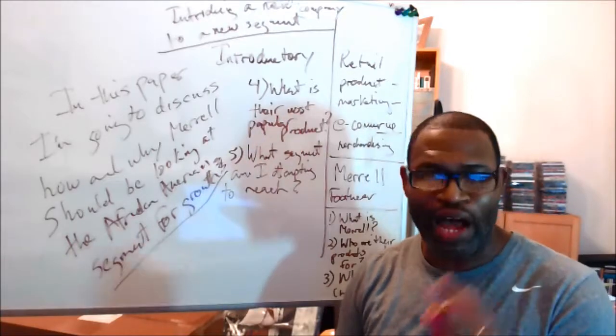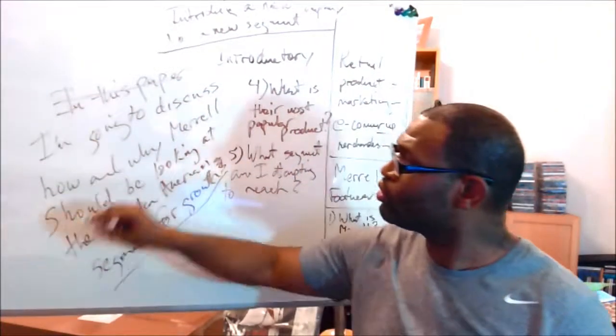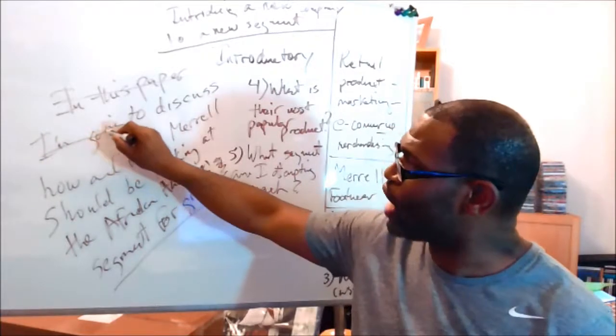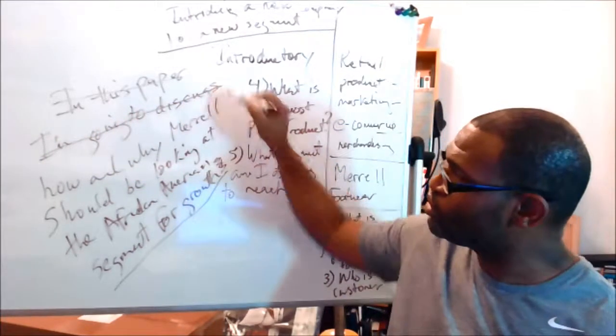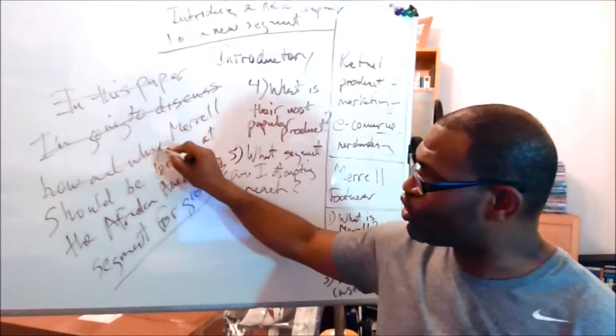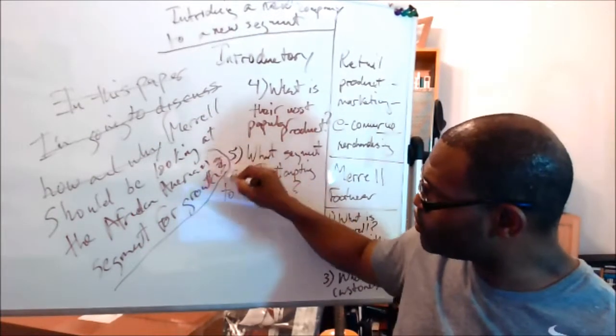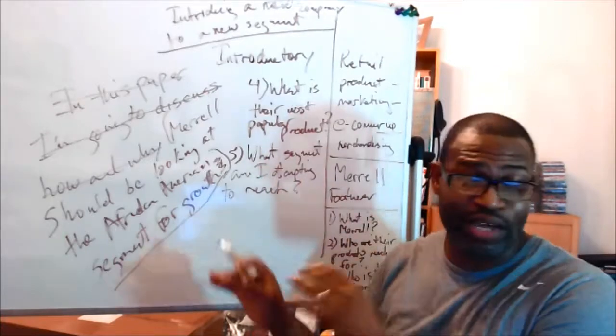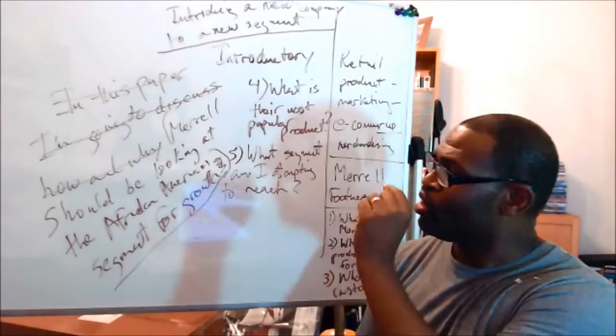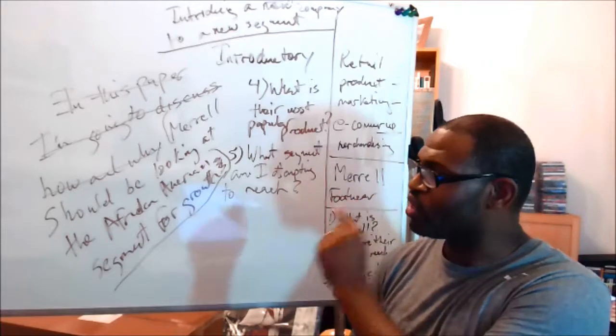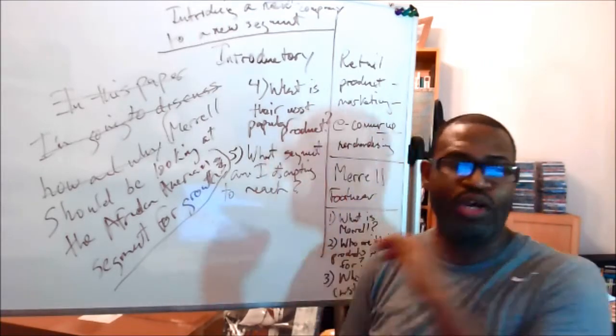If I go directly and strike out 'in this paper' and I get rid of the first person 'I'm going to discuss,' and then I remove the question, I now have a direct statement of intent. This is what I'm going to address in the paper: Merrill should be looking at the African-American segment for growth.